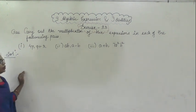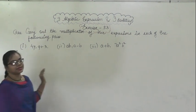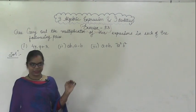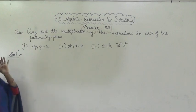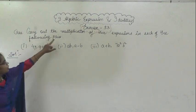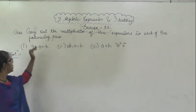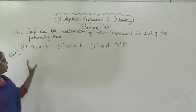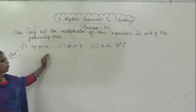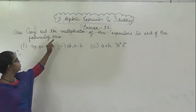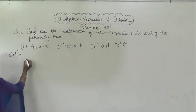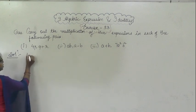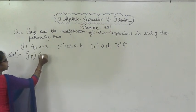Good morning. We are going to start Exercise 9.3. The first question of Exercise 9.3 is to carry out the multiplication of the expression in each of the following pairs. We have to do multiplication, so here it is given: 4p and the next one is (q + r).